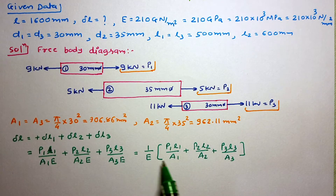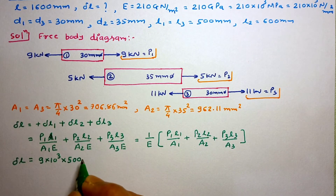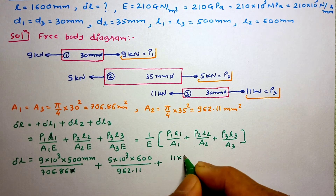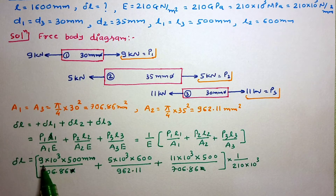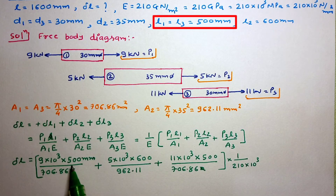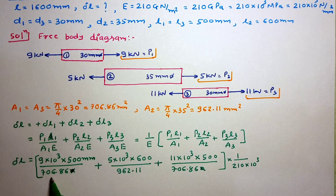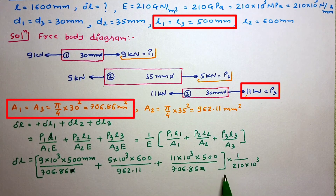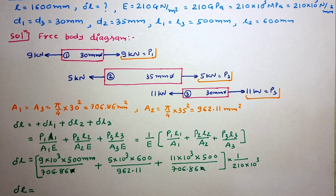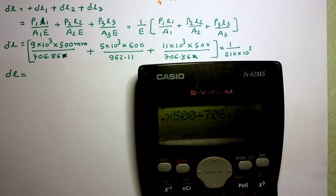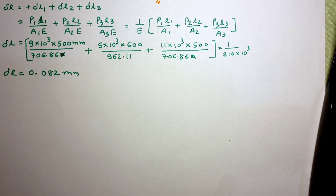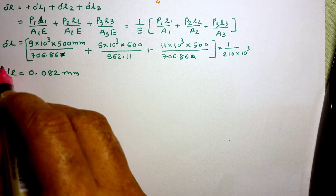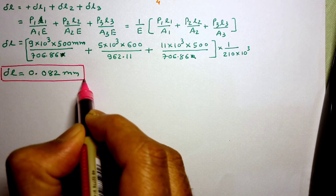Now let us substitute the values. P1 = 9 kN = 9 × 10³ N, L1 = 500 mm, A1 = 706.86 mm²; P2 = 5 kN converted to newtons with the length and area of the second section; and similarly for the third section with P3 = 11 kN. By calculating, we get the final answer: δL = 0.082 mm.